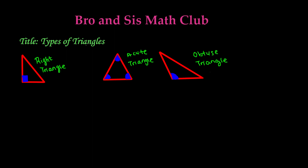Here we have our very first three triangles, and these are all in the very first category, which is about the angles. We have a right triangle, an acute triangle, and an obtuse triangle.